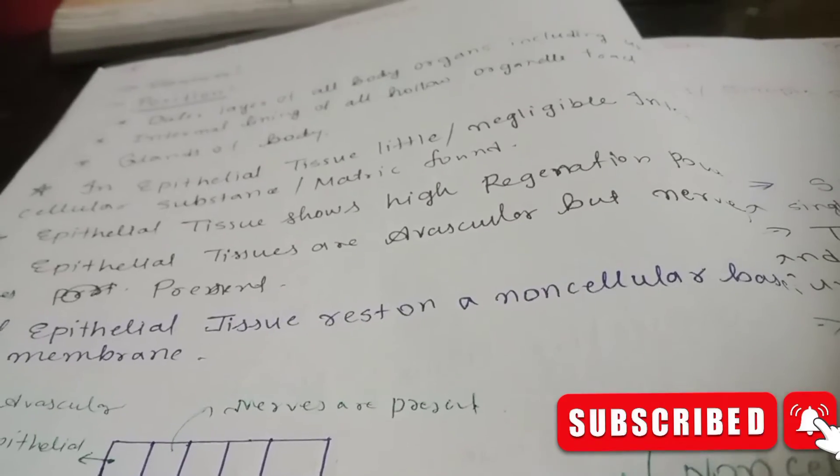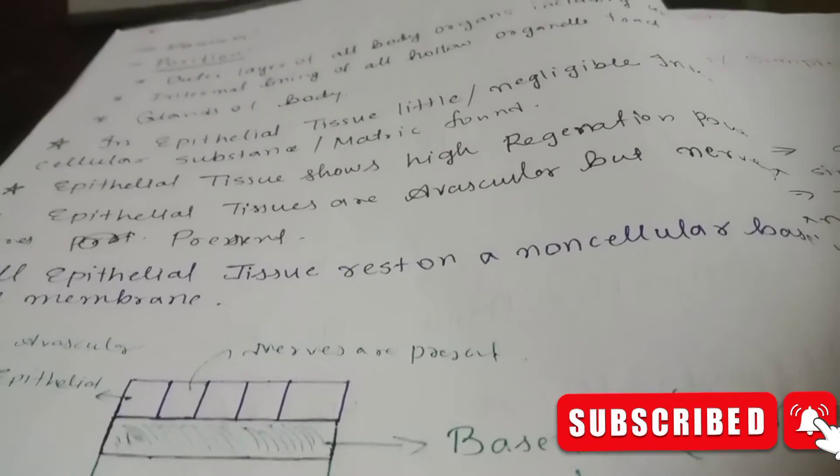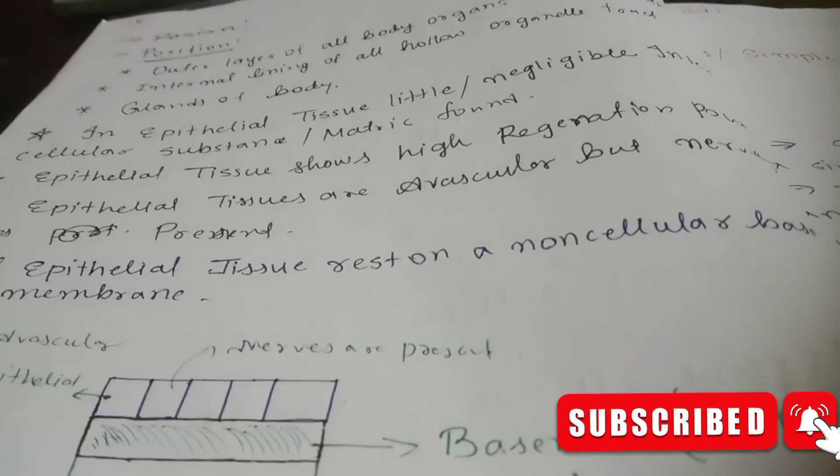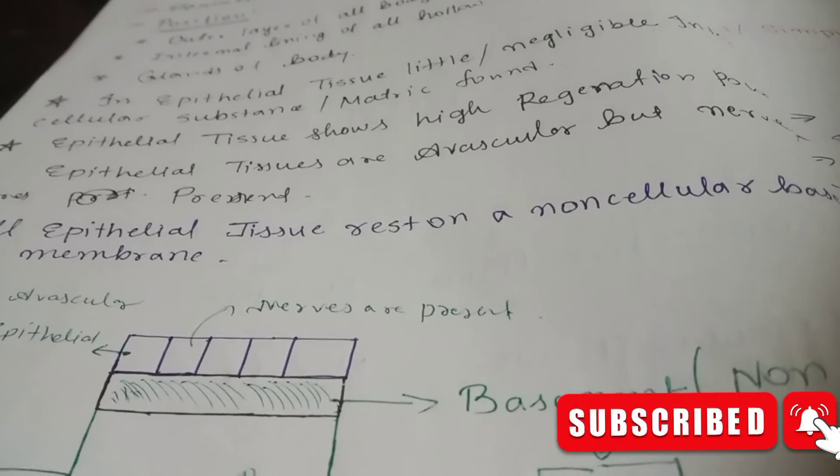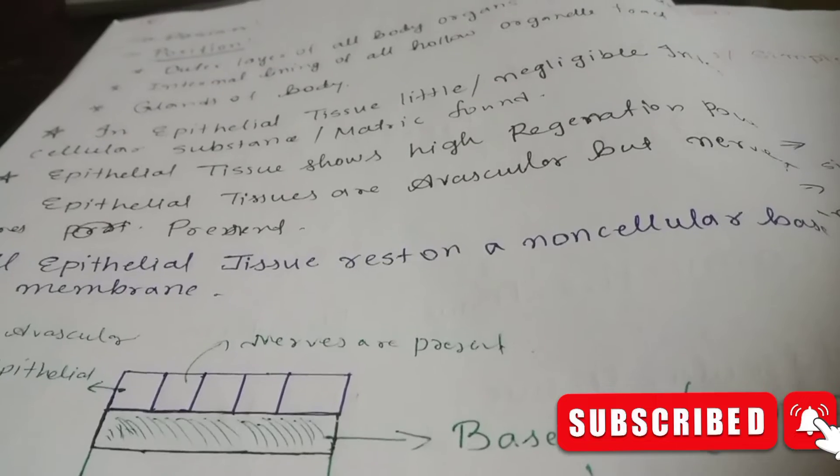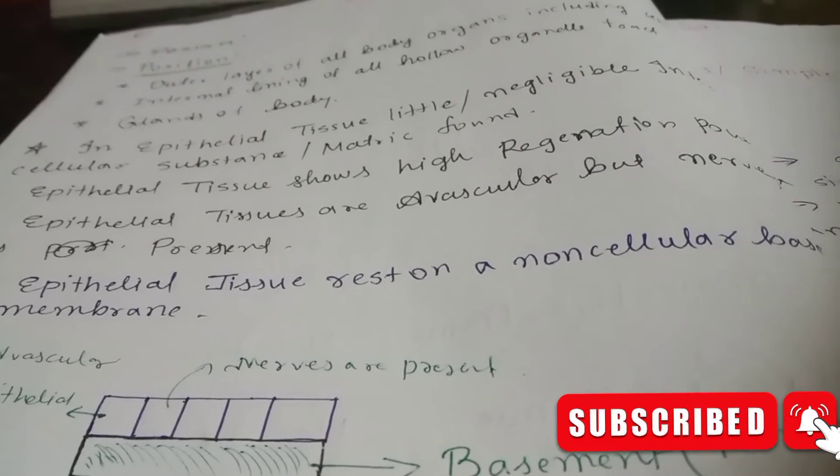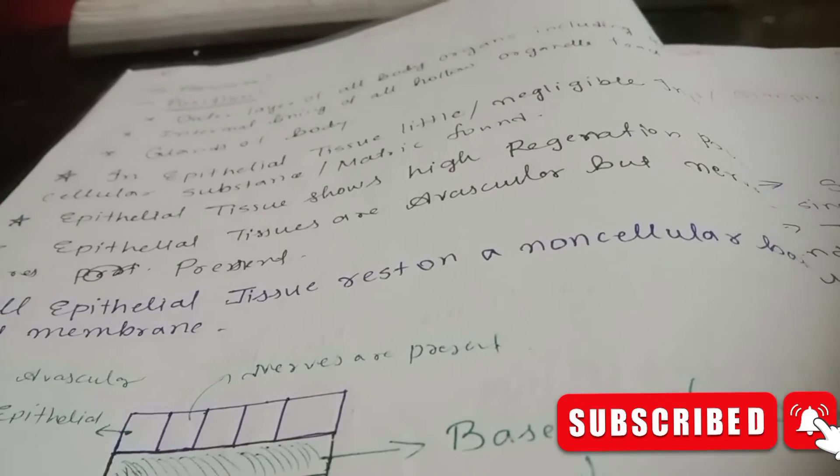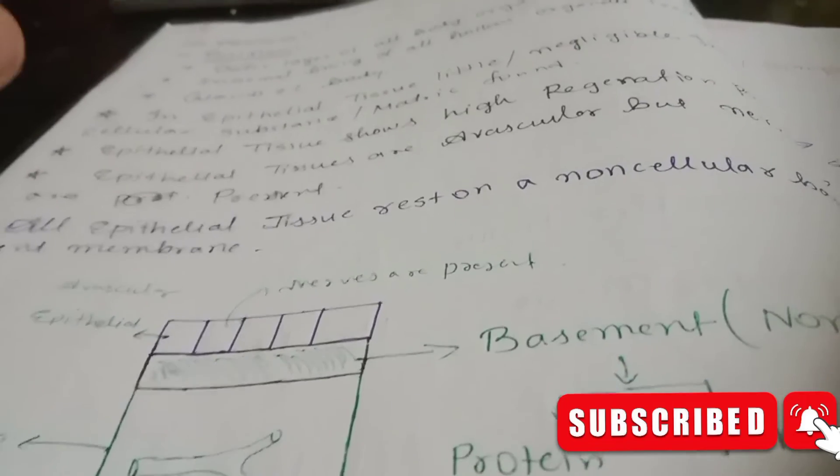Little or negligible intercellular substance or matrix is found. This means that between epithelial tissue layers, matrix is found in less amount. Between one layer and another layer, there is minimal matrix.